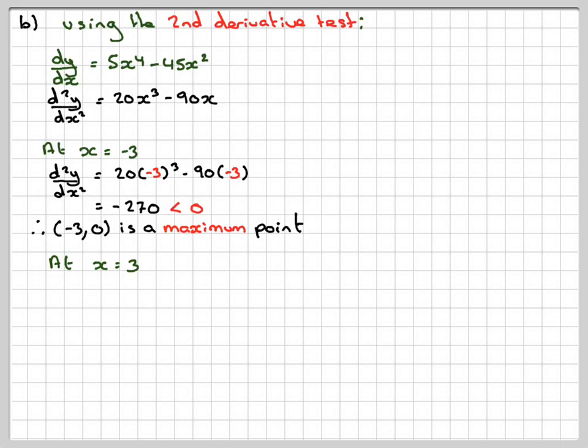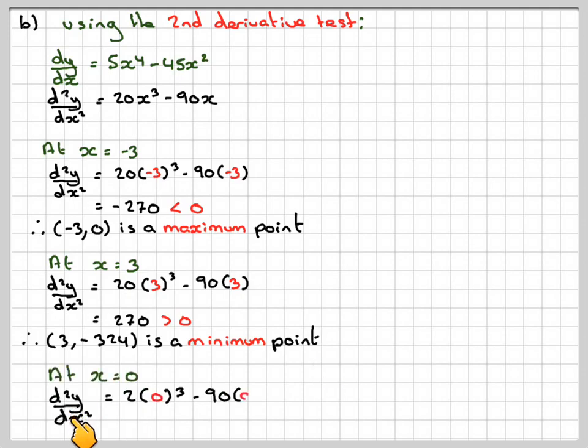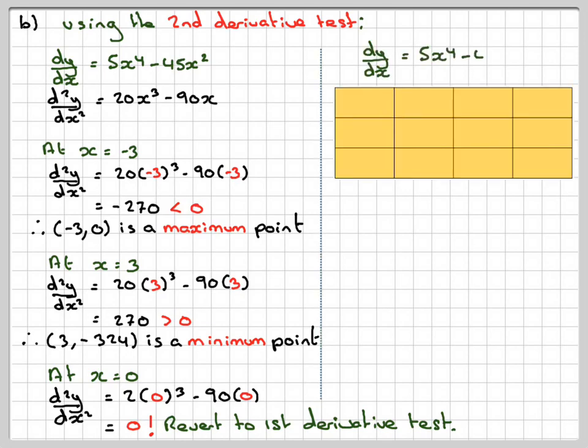At x equals 0, the second derivative will be 20 times 0 cubed minus 90 times 0, which is 0. Therefore, we now have a problem and have to revert back to the first derivative test, because this could be a maximum, minimum, or a point of inflection. You only have to take y equals x^4 to see that.